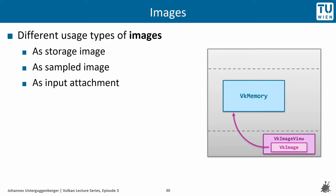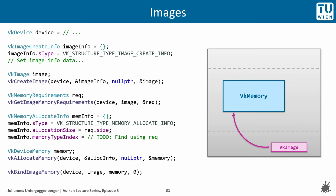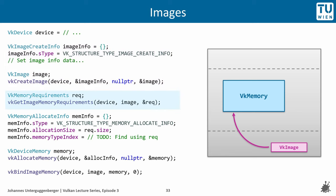In contrast to buffers, which can be used without a VkBufferView for many purposes, images are used almost always through an image view. In code, we first populate a VkImageCreateInfo struct instance — as seen in Episode 1 — specifying the size of the image and creating a VkImage handle. We then use the created VkImage handle to query memory requirements, allocate memory on the GPU based on them, and bind image and memory together using the vkBindImageMemory function.